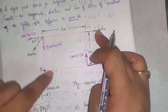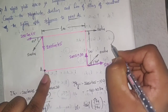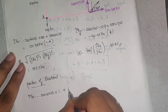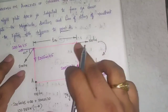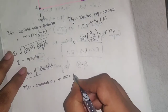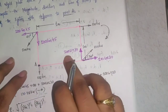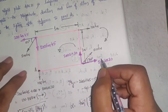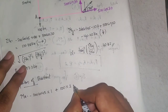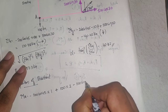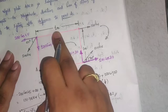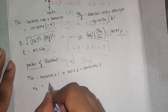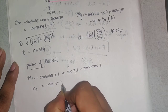For 100 kN about point A: it rotates clockwise, so plus 100 into perpendicular distance of 1 meter. For 200 sin 30 about point A: it rotates anti-clockwise, so minus 200 sin 30 into perpendicular distance of 1 meter. Solving all together, the moment about A = minus 141.42 kN·m.